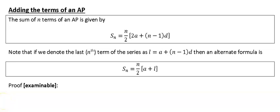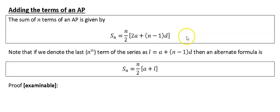We're going to look at two formulas for adding the terms of an AP. The more common one is: S_N = N/2 × (2A + (N − 1)D). If you know the first and last terms, you can also use S_N = N/2 × (first term + last term), where the last term L = A + (N − 1)D.